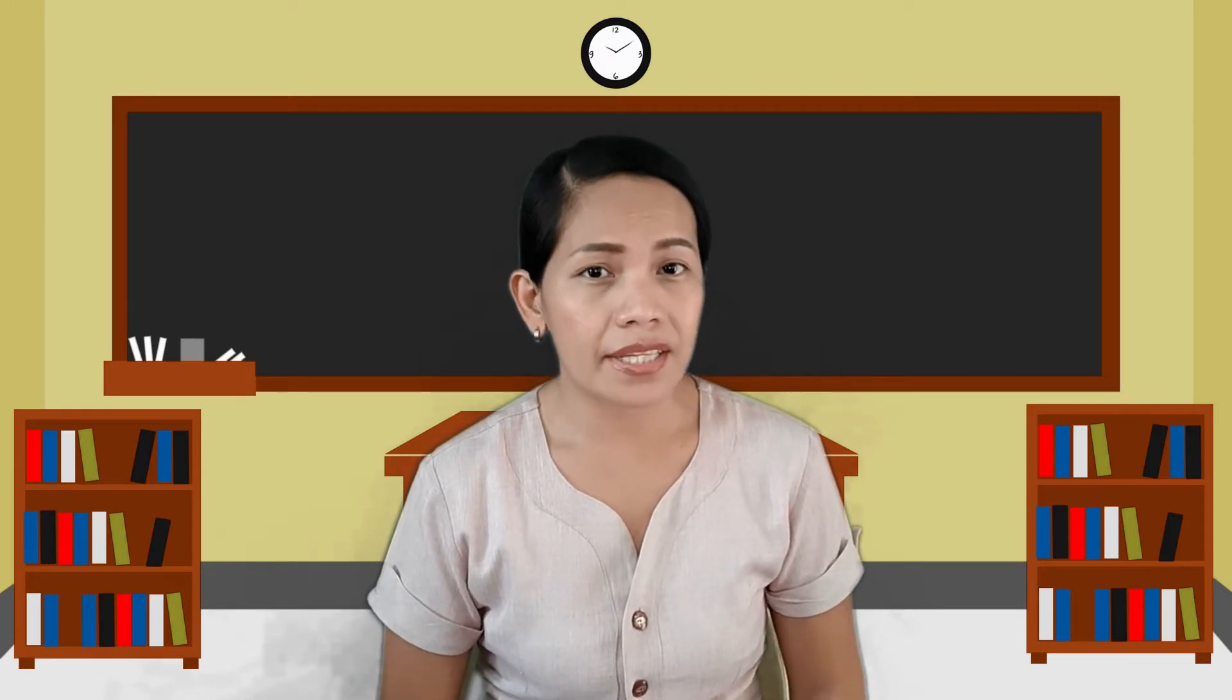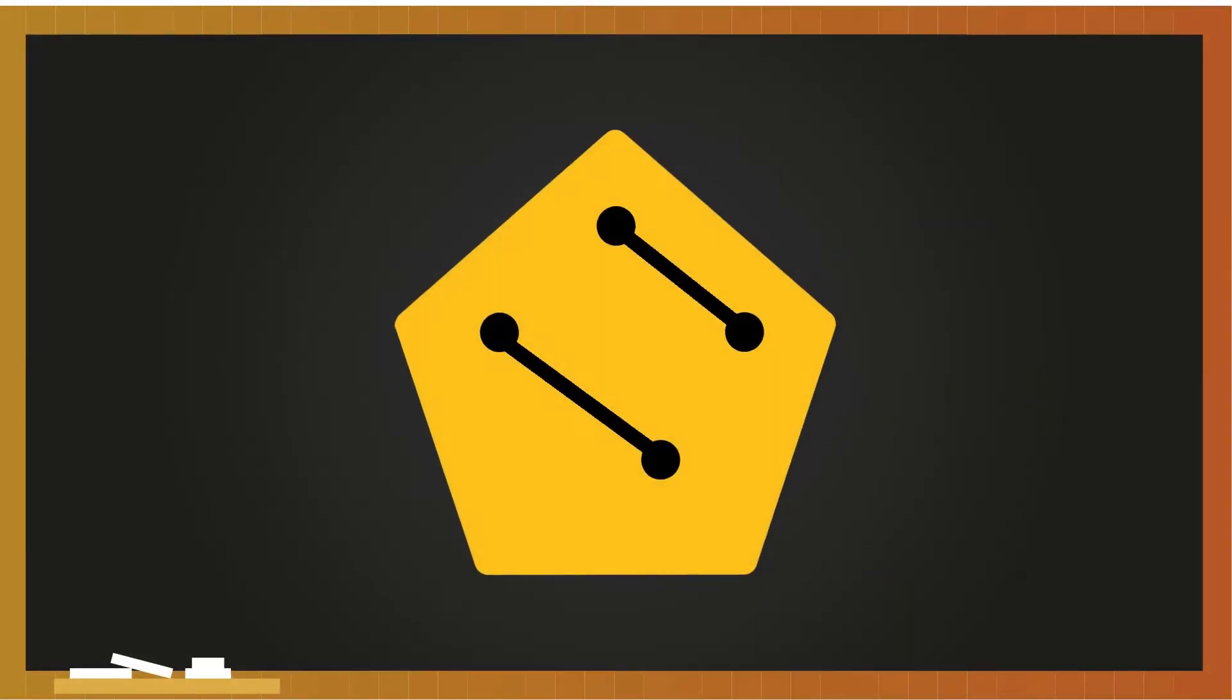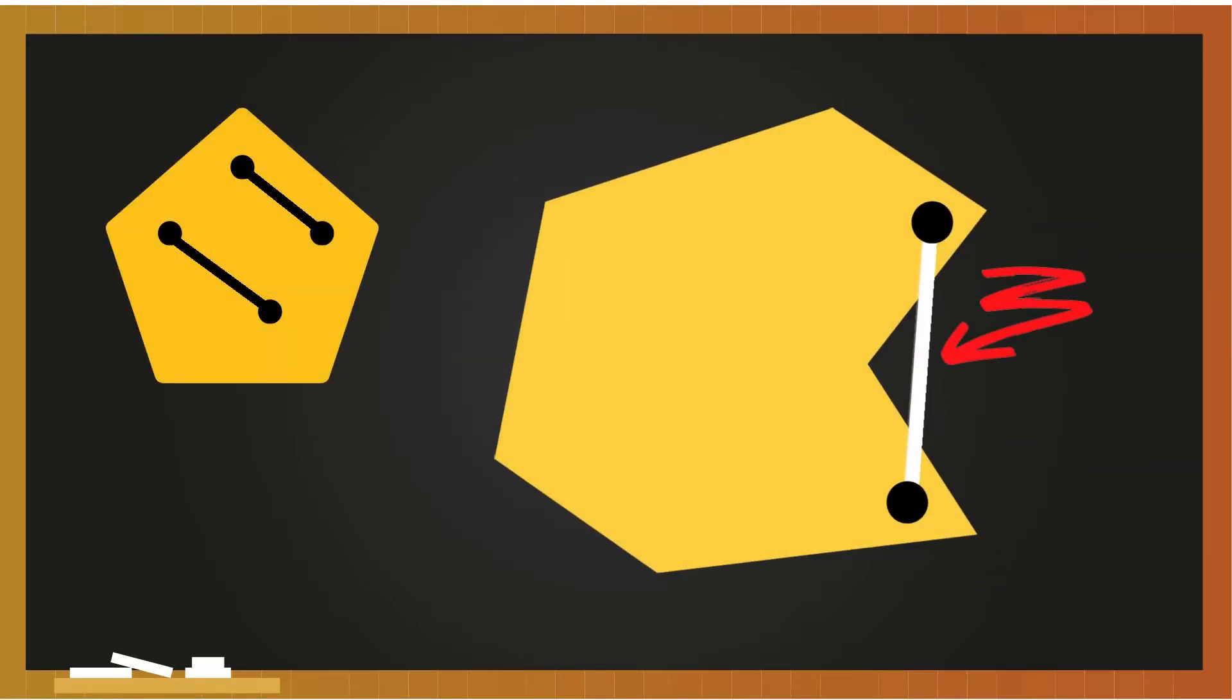But how do you know that a polygon is concave or convex? To know if a polygon is convex, put two points anywhere in the interior of the figure. If the line segment connecting any two points is always inside the polygon, then it is a convex polygon. Otherwise, it is concave. That is, a portion of a line segment is outside the polygon already.